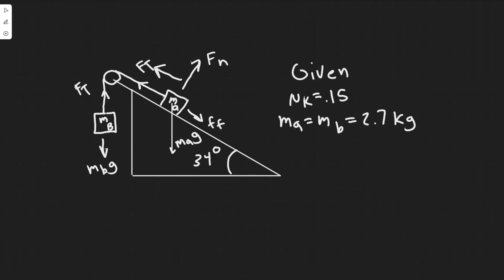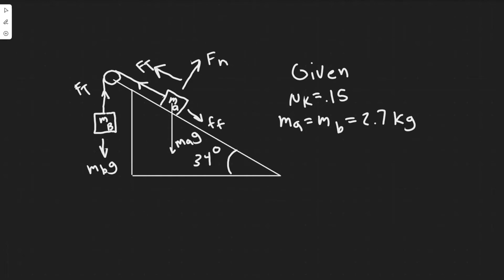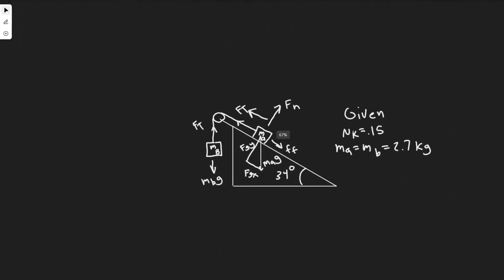When doing a free body diagram, forces already along an axis don't need to be decomposed. However, gravity isn't along either axis, so we split it into components. We draw a right triangle: FGy is the component perpendicular to the incline (y-direction), and FGx is the component along the incline (x-direction).